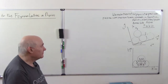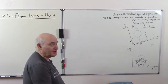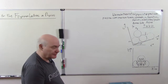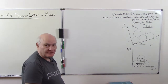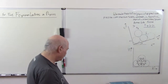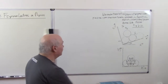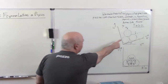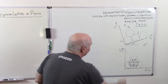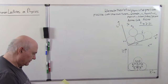Hi, I'm Mark Weitzman and I want to continue with some problems from the exercises for the Feynman Lectures in Physics. This is problem 233. Over here is the relevant diagram and I'll read it to you.